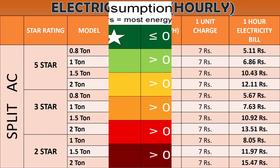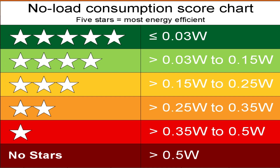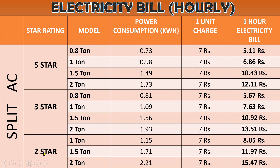Now we will talk about the benefits of using a 5-star AC. You will surely come across the question when you go to buy an AC: what star rating do you want — whether it is 2-star, 3-star, or 5-star. I would directly relate this star rating with your per-hour electricity bill. That is, how much electricity bill will come by switching on a particular AC model for 1 hour. We will talk about split AC — 2-star, 3-star, and 5-star — and compare all three.